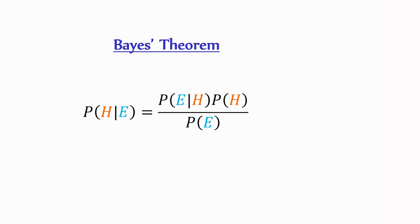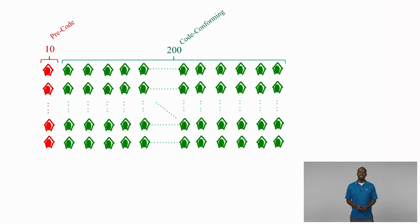Now as it turns out, there is a systematic way to reason about the likelihood that the collapsed building was pre-code or code conforming, which involves all the essential ingredients that go into understanding Bayes' theorem. So let's start by picturing a representative sample of the buildings in Halisi's old neighborhood. Say 200 code conforming and 10 pre-code buildings. That way we maintain our 20 to 1 ratio.